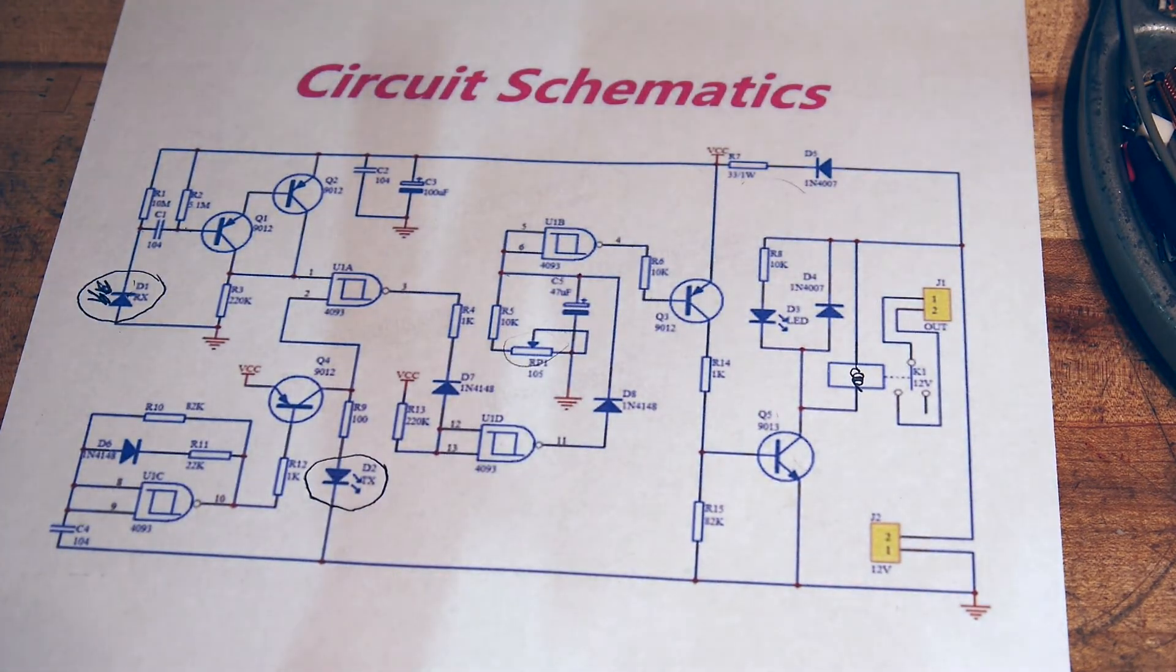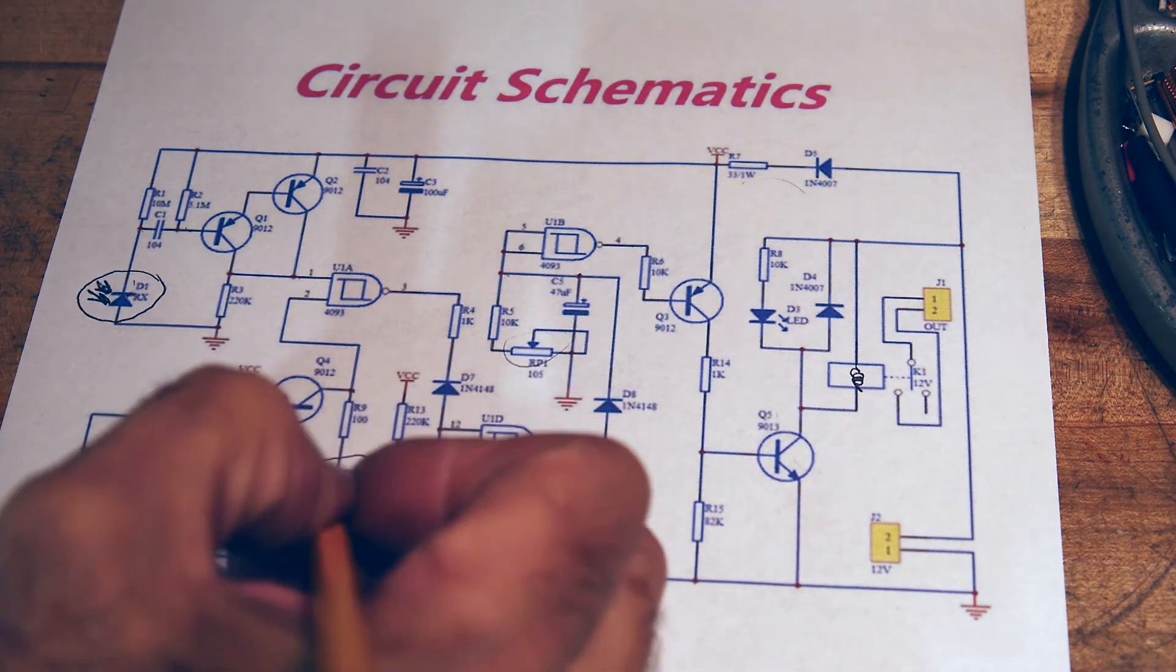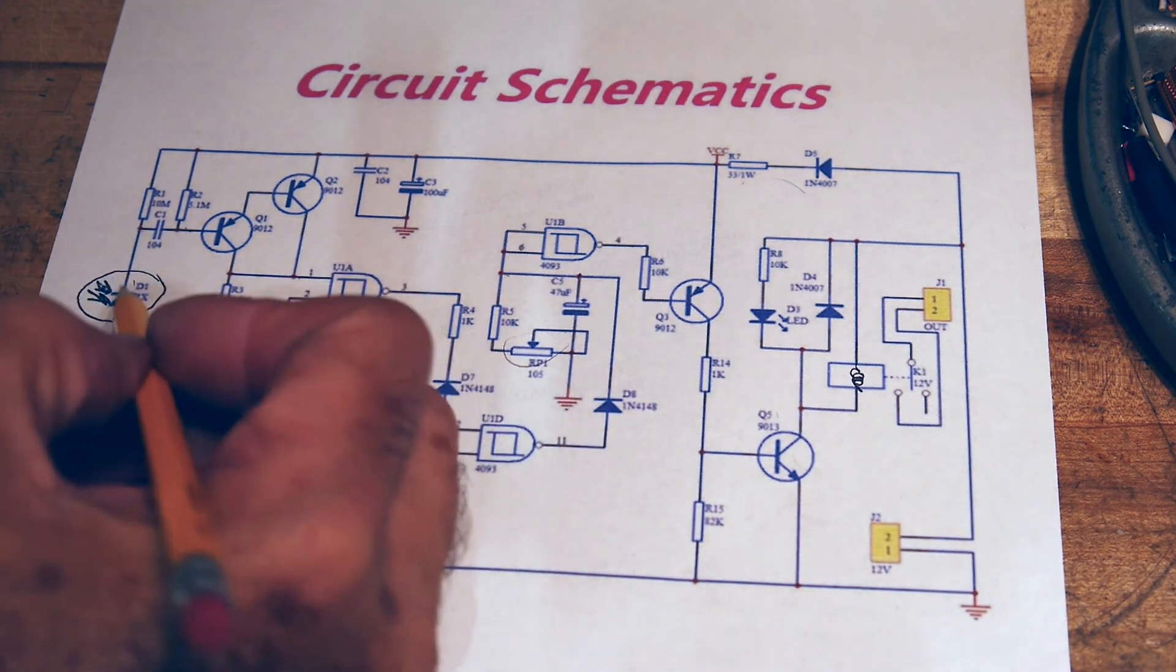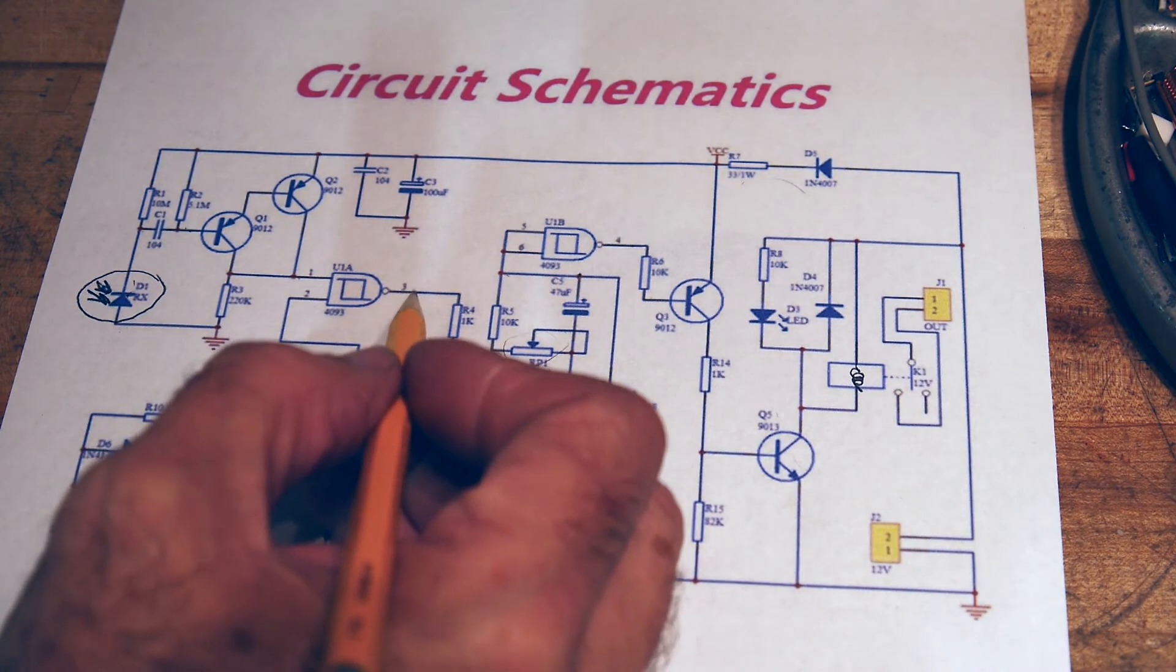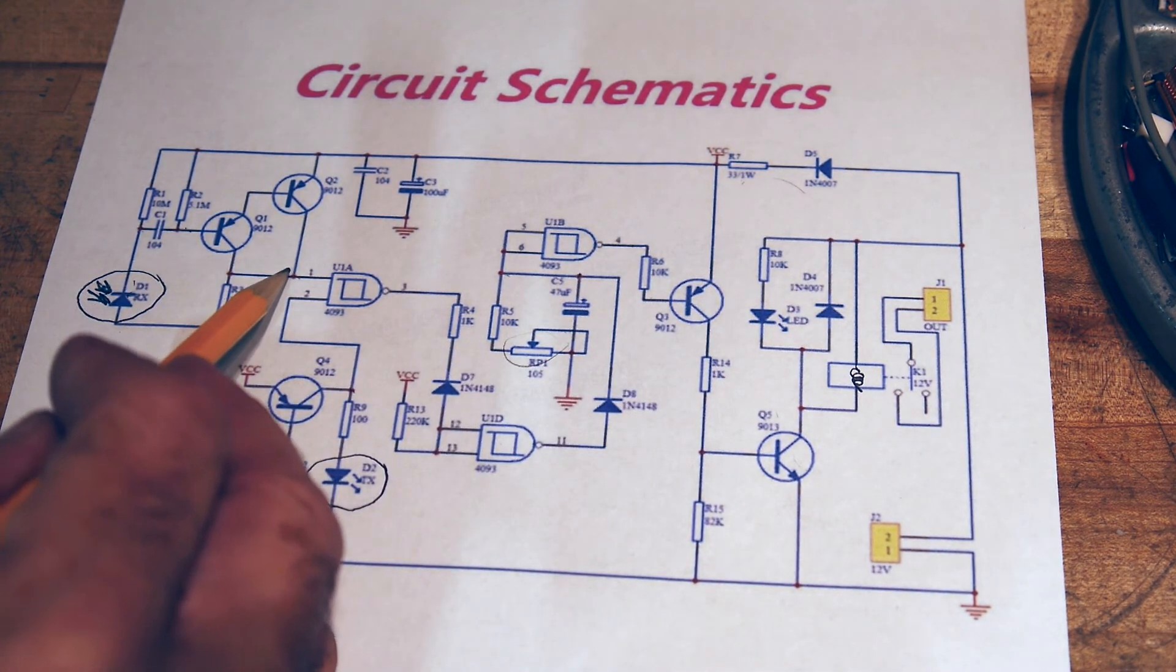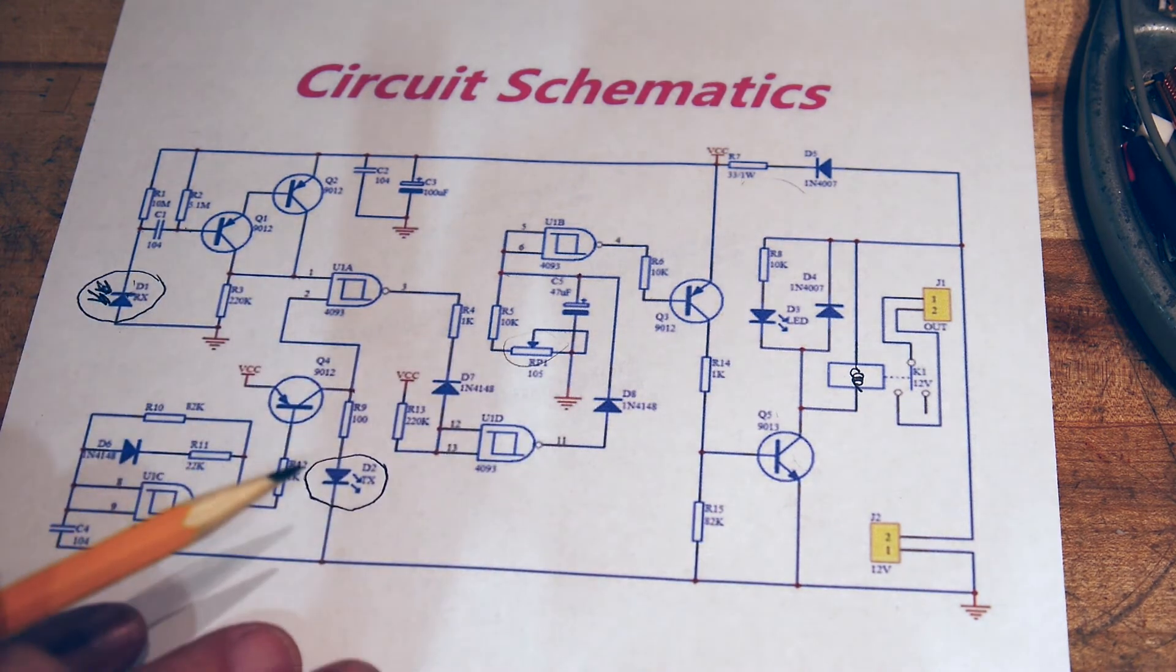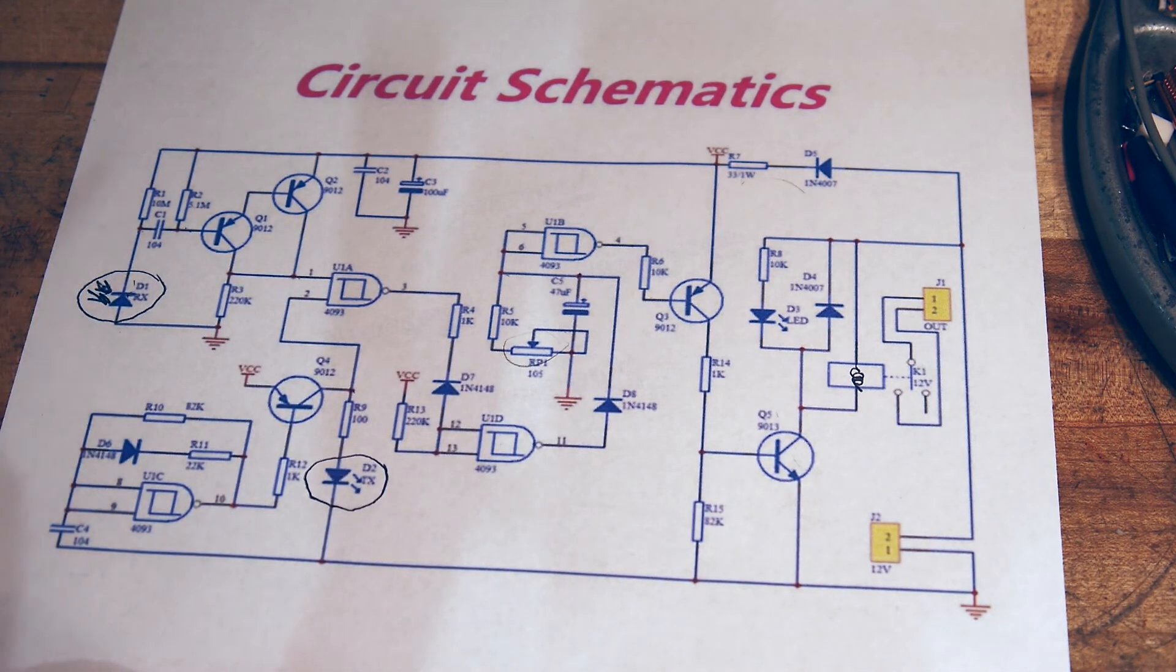What that does is it's synchronous detection. What it's saying is that both the LED signal has to be high and the photodiode has to be high. So both have to be high to come through here. If for some reason the photodiode is high when the LED is low, then the circuit still won't trip. It's a way to do synchronous detection to try to eliminate any ambient light problems.